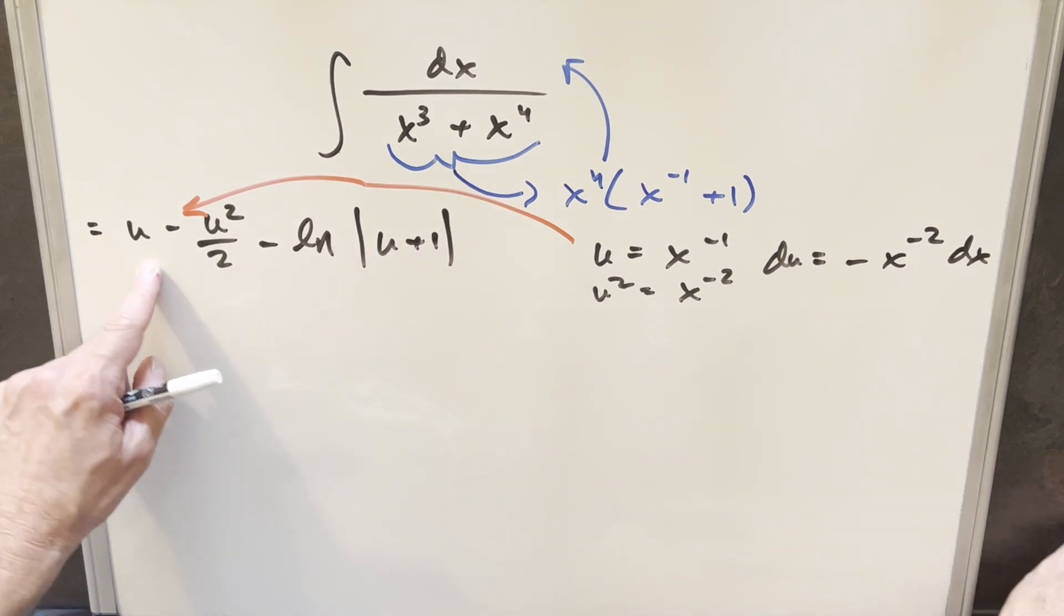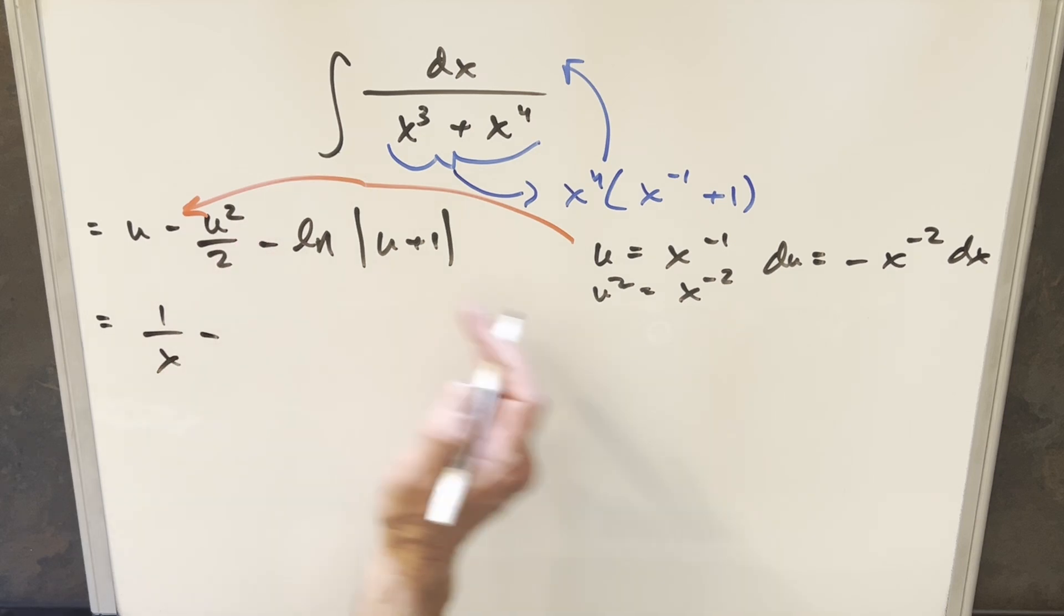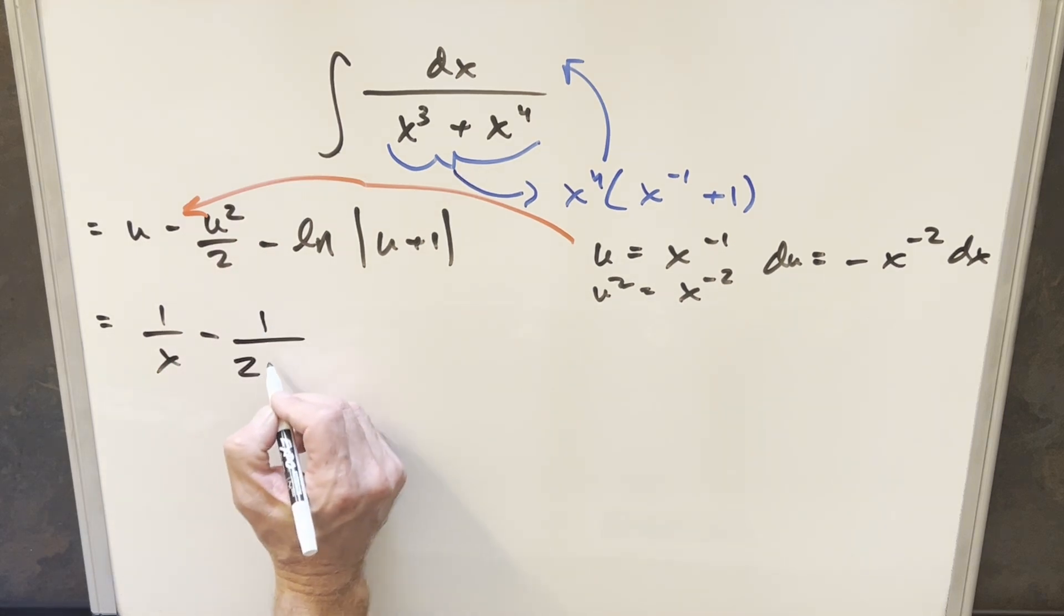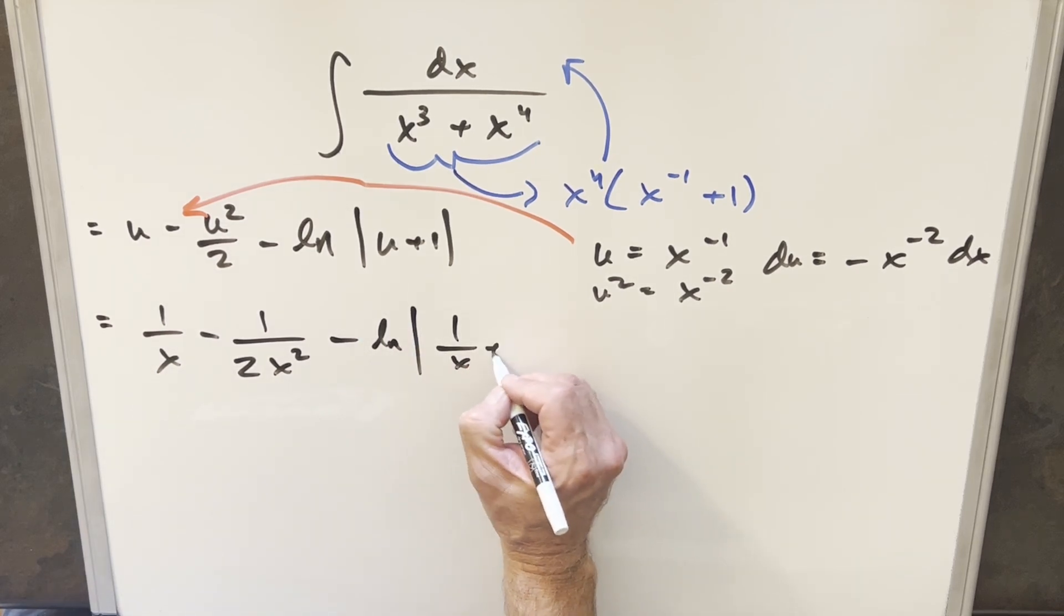So first, plugging in for u here, this is going to be, I'm going to write the x minus 1 as 1 over x. And then doing it again here, our u squared is this x minus 2. I'm going to write this as 1 over 2x squared. And then for this last part, plugging in for u, this is going to be 1 over x plus 1.